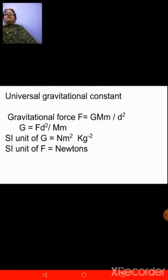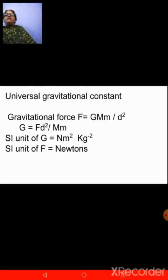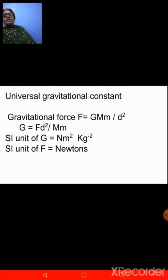This you all are aware of. So gravitational force F is equal to capital G, which stands for the gravitational constant, into capital M, that is mass of the earth, into small m, that is mass of the object, upon distance square — the distance between the objects. From this, when we derive the formula for capital G, we get it as F·D² upon capital M into small m. This D square can be replaced by R square as well.